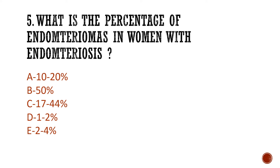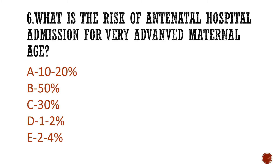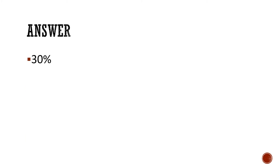Question 5: What is the percentage of endometriomas in women with endometriosis? Options include 1–2%, 10–20%, 17–44%, and others. The answer is 17–44%.